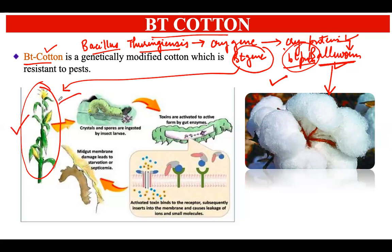When the bollworm comes and attacks the cotton plant, the cry protein enters into the gut of the insect. Due to the alkaline medium of the insect's gut, the cry protein gets activated, leading to the formation of perforations in the epithelial lining of the gut. This leakage ultimately leads to the killing of the bollworm.